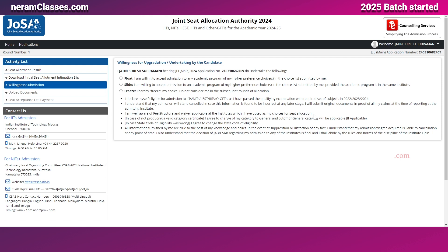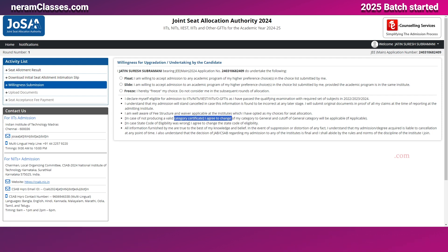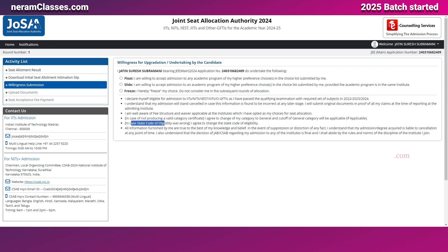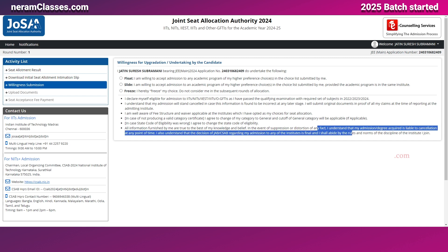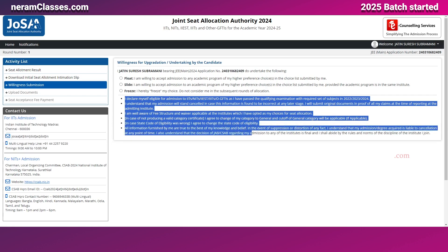In case of not producing a valid certificate or if any category details are found incorrect, your seat will be void. Similarly, if the state code of eligibility or home state quota is found to be wrong, your seat will be cancelled. These are declarations that all information you provide is correct. Once you select your option, it is like signing and accepting all these regulations before proceeding.